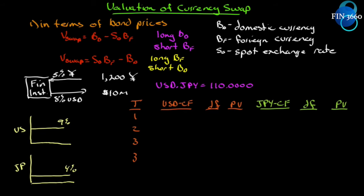Let's look at the valuation of a currency swap. We can follow the same procedures we did for the interest rate swap. We can value the swap in terms of bond prices or in terms of forward rate agreements. Let's start with the bond prices and write out our formula. The value of the swap is the value of the domestic bond minus the value of the foreign bond multiplied by the spot exchange rate.